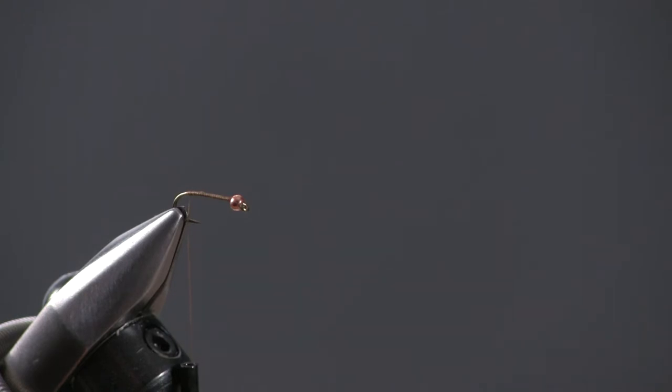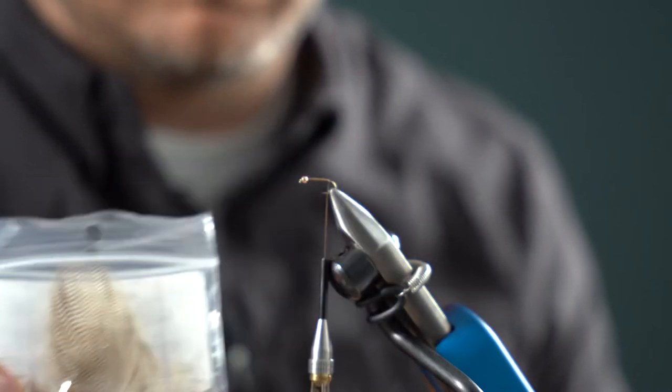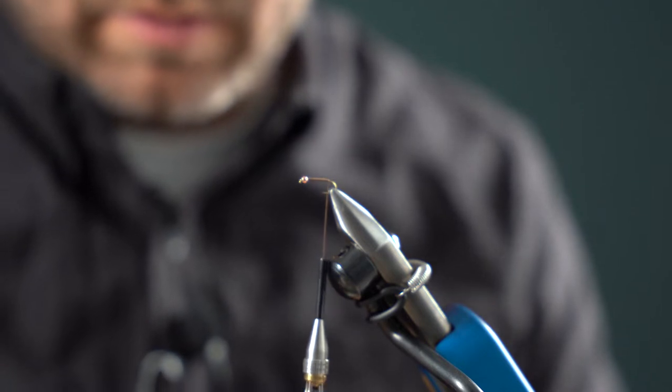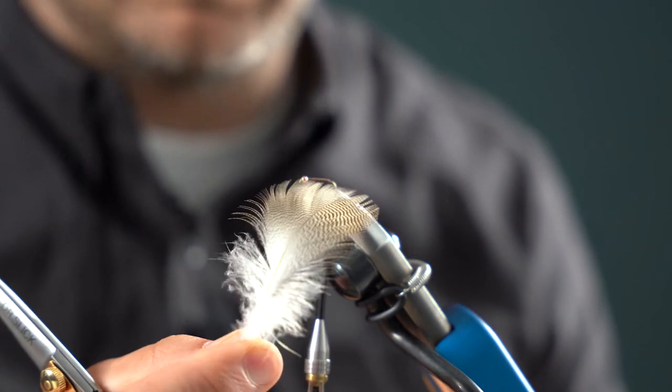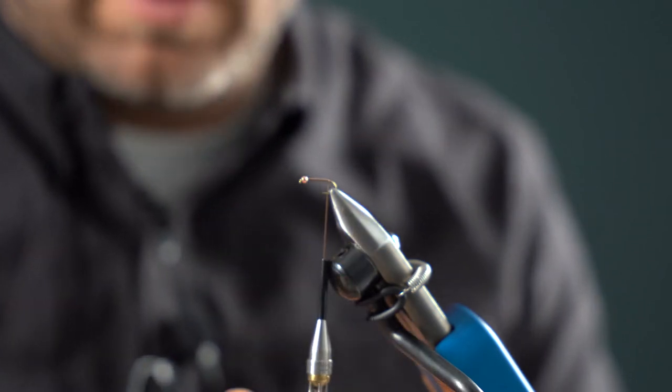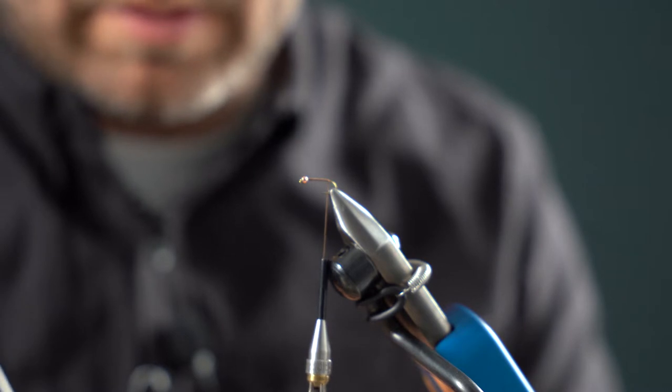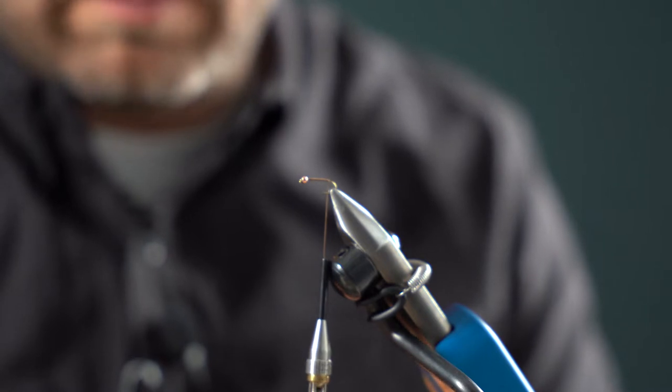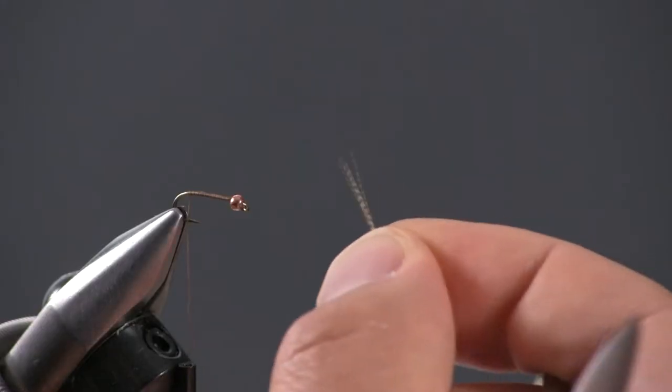For the tail, we're going to be using a material, it's lemon wood duck. And these feathers are beautiful. They are finely mottled or speckled. And these are just perfect for imitating the tail of the natural PMD nymph. So I'm just kind of printing this back and I'm going to select out eight or ten of these little fibers.